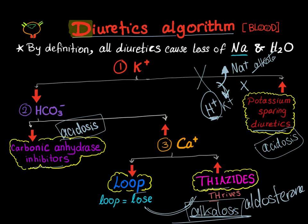Let's recap the algorithm. All diuretics will lead to loss of salt and water, so you will have hyponatremia. First, look at potassium: if it's high, that's a potassium-sparing diuretic such as spironolactone. If it's low, look at HCO3 — bicarb: if it's low, that's carbonic anhydrase inhibitors such as acetazolamide. If bicarb is high, look at calcium: if calcium is low, that's loop; and if it's high, that's thiazide. See you next video.